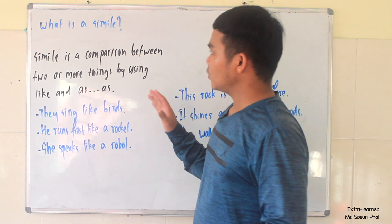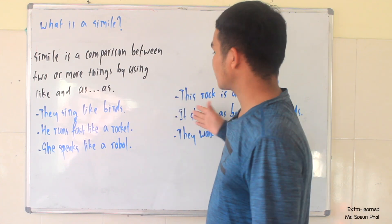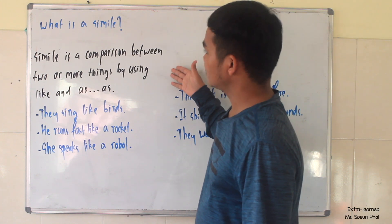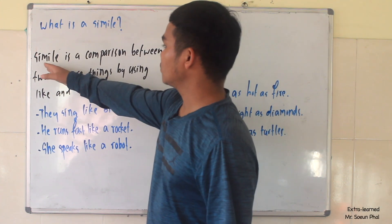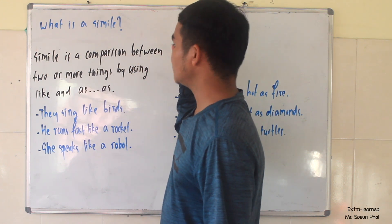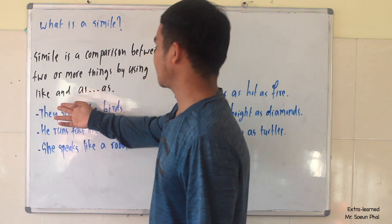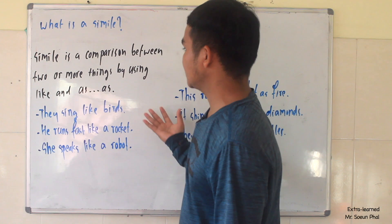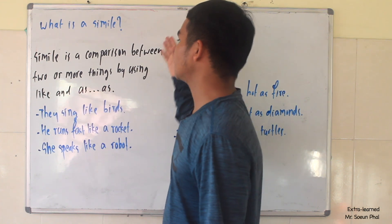As you can see on the whiteboard, we have the meanings and the examples. We're going to take a look at the meaning first. So what is a simile? Simile is a comparison between two or more things by using 'like' and 'as-as'. So when we compare between two or more things using 'like' and 'as-as', we call it a simile.